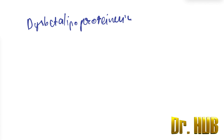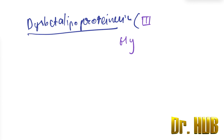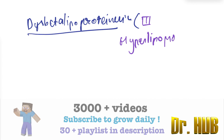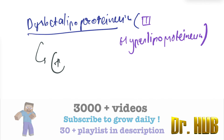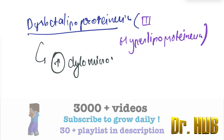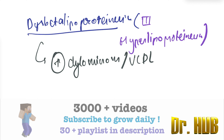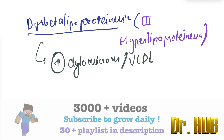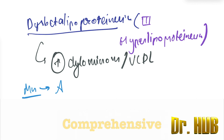The third variety is disbetalipoproteinemia, which is Type 3 hyperlipoproteinemia. Here the increased levels are chylomicrons as well as VLDL.